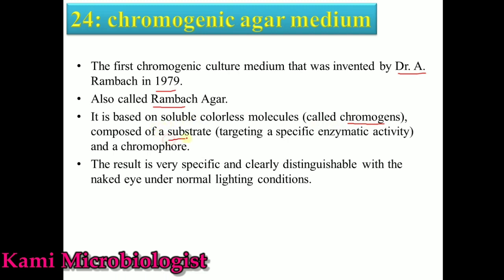This media contains a molecule called chromogens. Chromogens are composed of a substrate as well as chromophores. Due to the combination of these two molecules, enzymes will bind to the substrate, and through this mechanism we get colored colonies. The result obtained through this media can be seen with the naked eye under normal light.